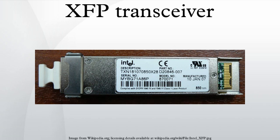XFP modules are commonly available in several different categories: SR at 850 nm for a maximum of 300 m; LR at 1310 nm for distances up to 10 km; ER at 1550 nm for distances up to 40 km; and ZR at 1550 nm for distances up to 80 km.